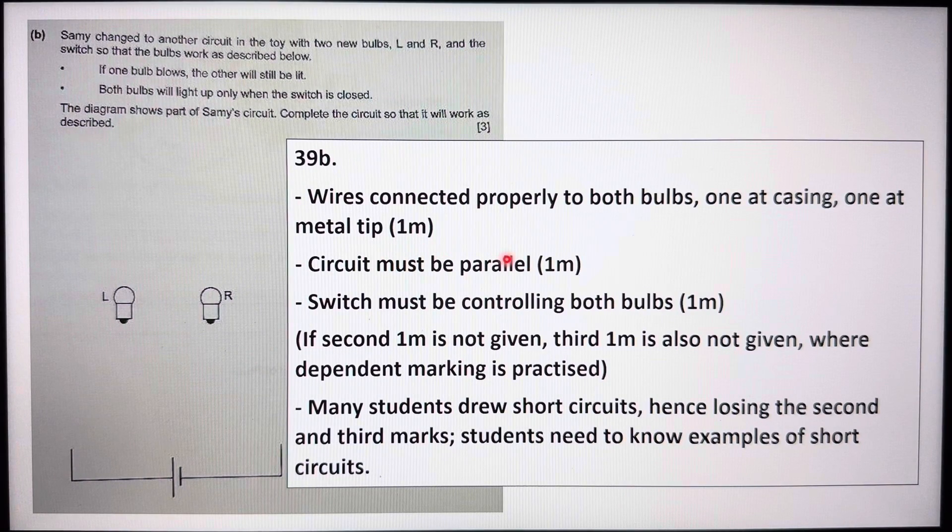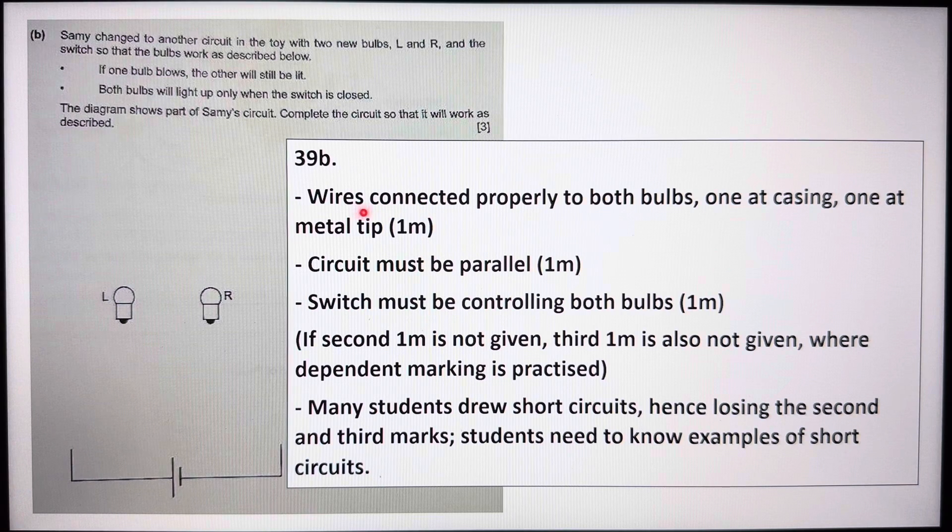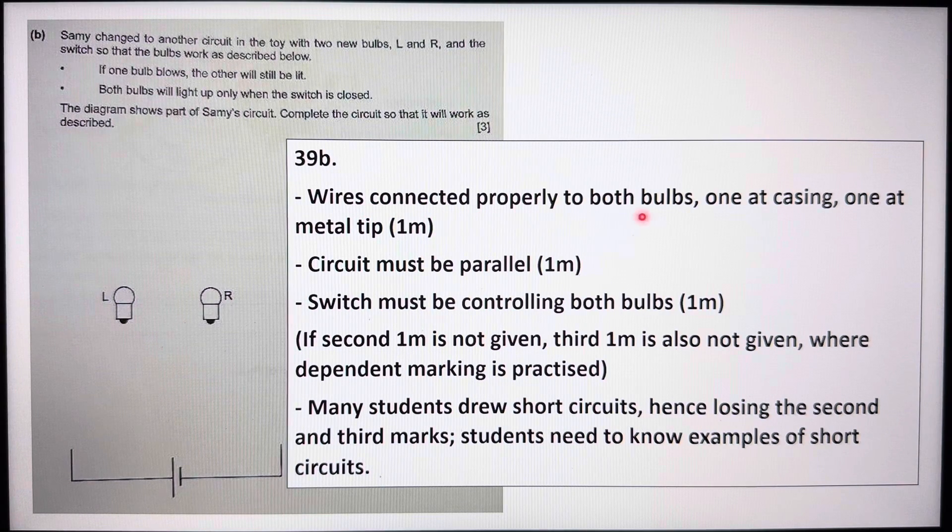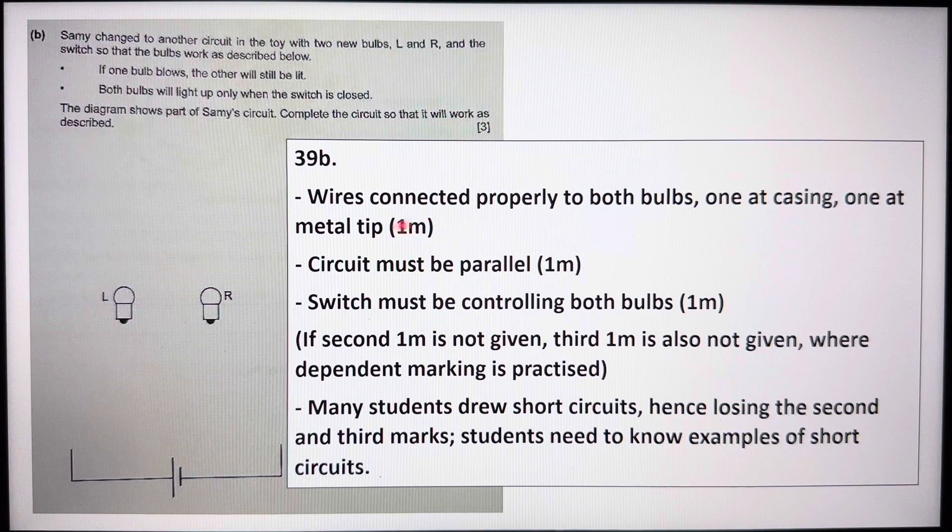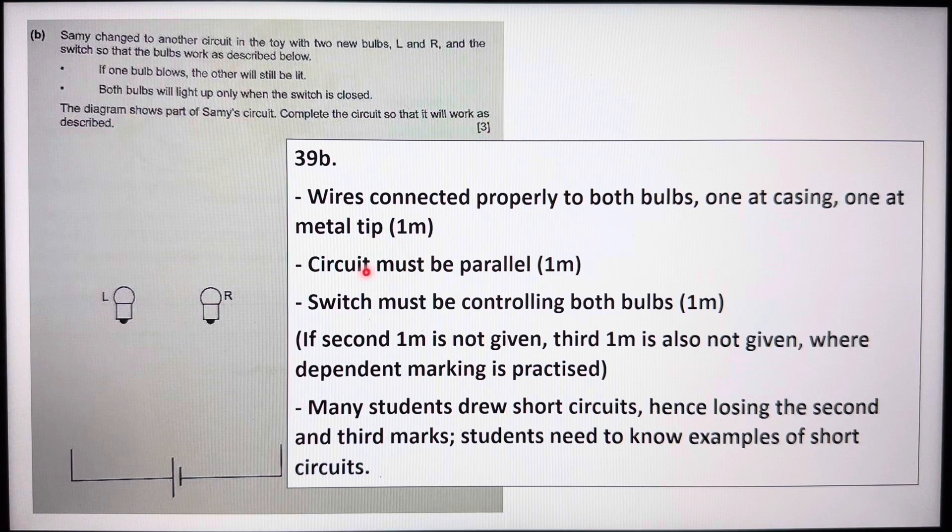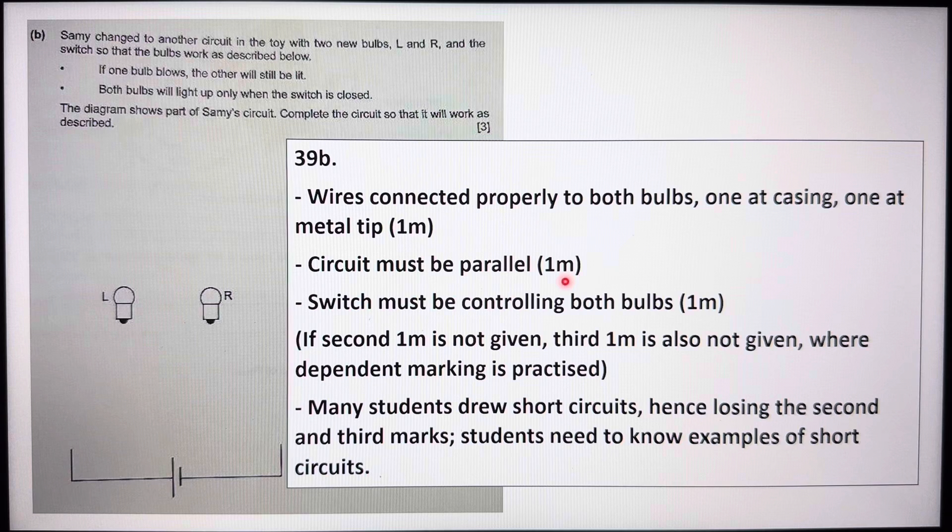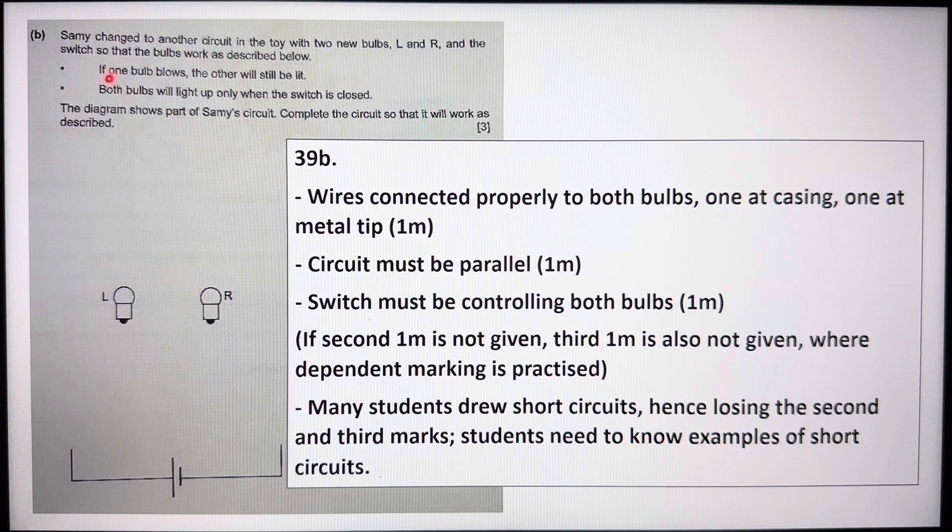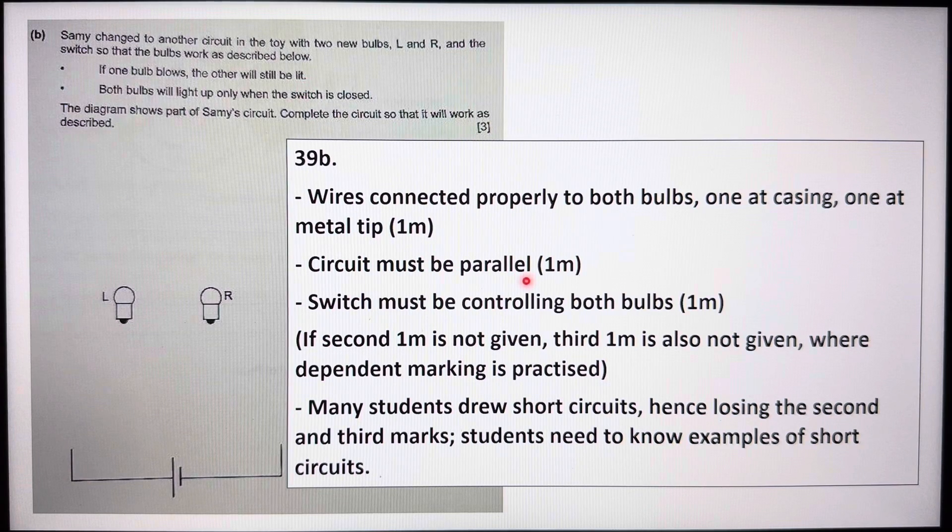How are the marks allocated here? The wires need to be connected properly to both bulbs, one at the casing, one at the metal tip. So the circuit has to be parallel. This will be awarded one mark because the question mentioned if one bulb blows, the other will still be lit. So the circuit must be in the parallel arrangement.